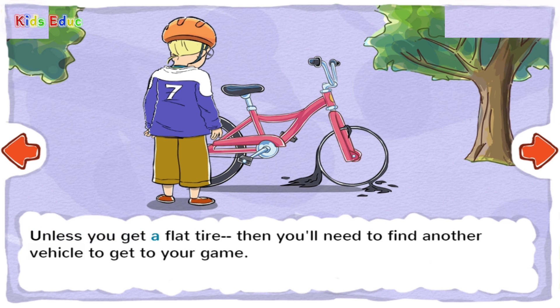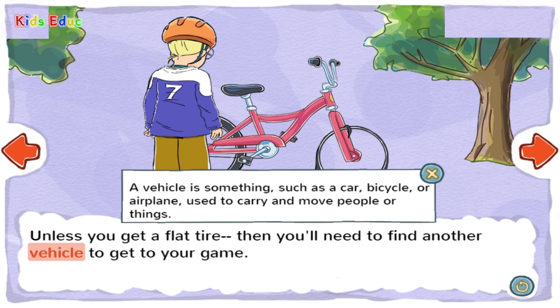Unless you get a flat tire — then you'll need to find another vehicle to get to your game. Vehicle: A vehicle is something such as a car, bicycle, or airplane used to carry and move people or things.